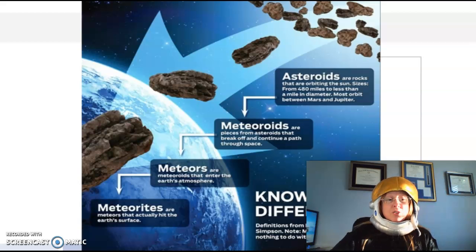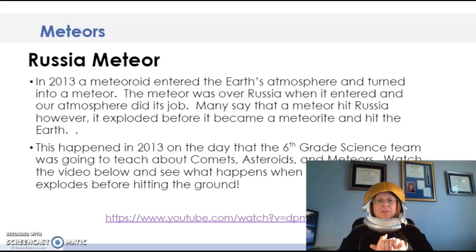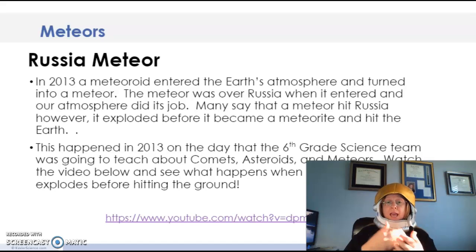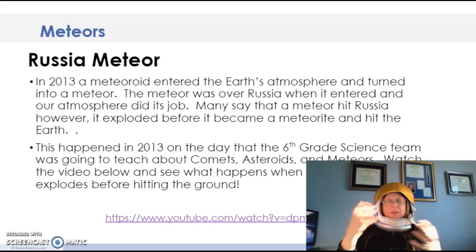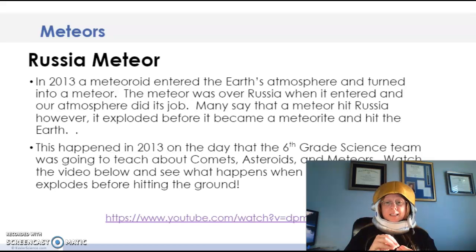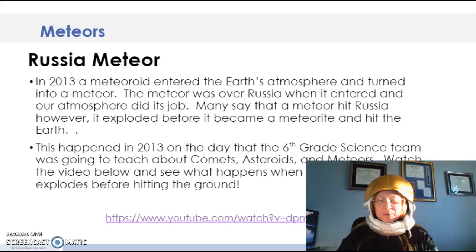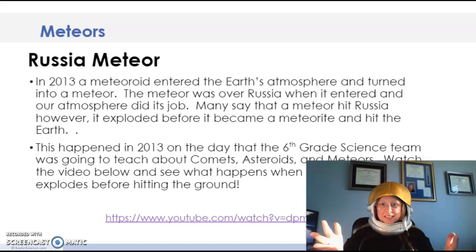But I do have some extra information here for you that is pretty fun that you can look at. Here's some information about the Russia meteor. In 2013, one actually entered the earth's atmosphere and turned into a meteor, but the atmosphere actually did its job so it never hit the earth. So it did not become a meteorite. The interesting thing about this in 2013 is that the sixth grade science team at the time at Draper, on the day that happened, they were going to teach about comets, asteroids, and meteors. Was that not the most crazy coincidence? So you can watch a video below right here about what happens when that meteorite explodes before hitting the ground. So that's pretty cool. Fun little video there for you.